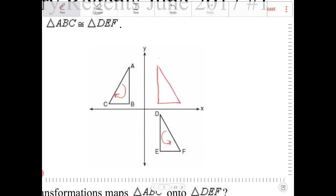So if I reflect triangle ABC over the Y-axis, what I'll end up with is A'B' and C' here. And then after that, I want to translate this down.